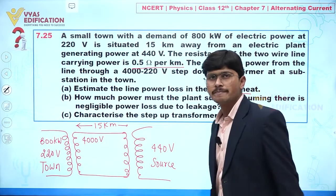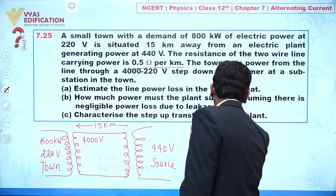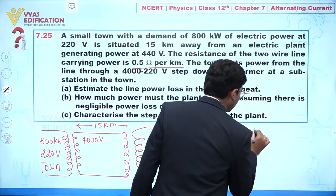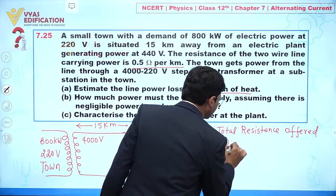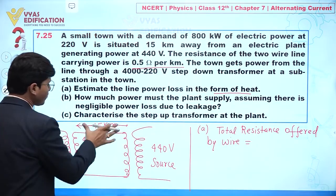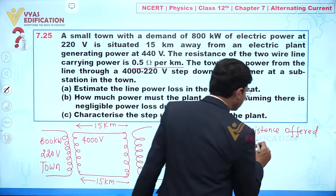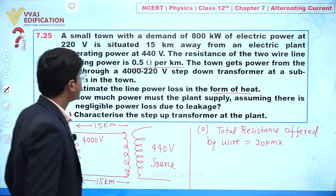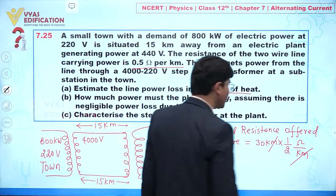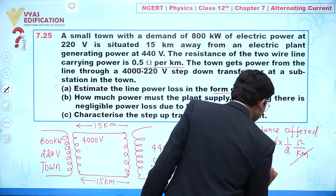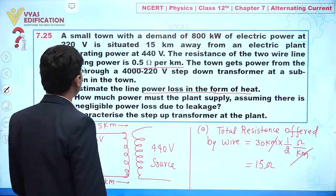Now we have to find and estimate the line power loss in the form of heat. For part A, we first calculate the total resistance offered by the wire. Since we have two lines, each 15 kilometers, the total distance is 30 kilometers. With resistance 0.5 ohm per kilometer, the total resistance is 30 × 0.5 = 15 ohm.